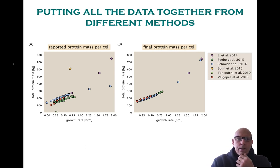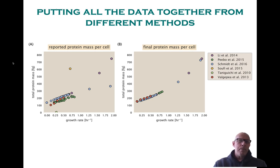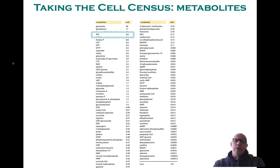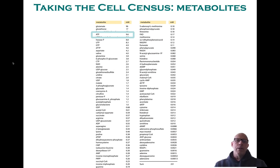In recent work done by Griffin Chury and Nathan Beliveau, they basically took stock of the protein mass per cell as a function of growth rate for all these different methods. The Taniguchi study uses microscopy, Schmidt uses mass spec, and Lee uses ribosomal profiling — and all of these tell a relatively self-consistent story. One can also ask questions about metabolites, and mass spec has been very powerful in this regard as well.